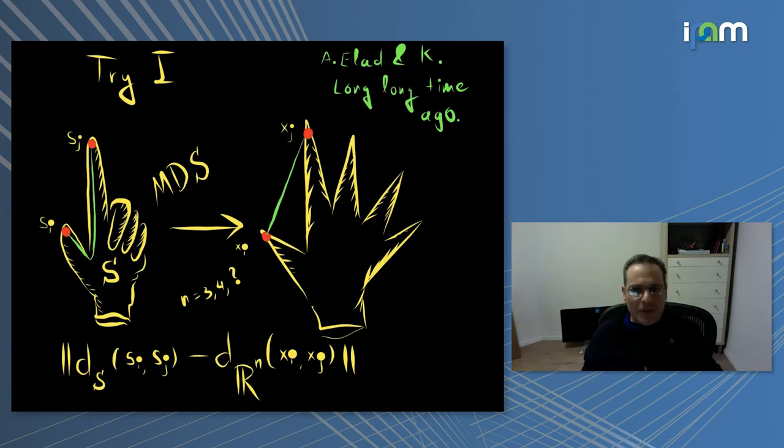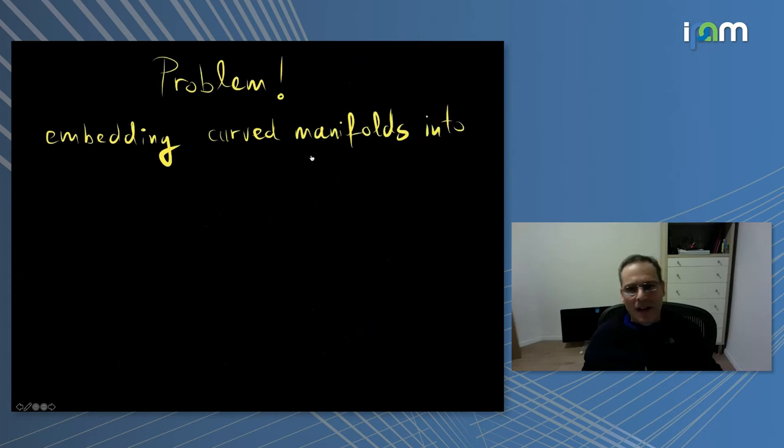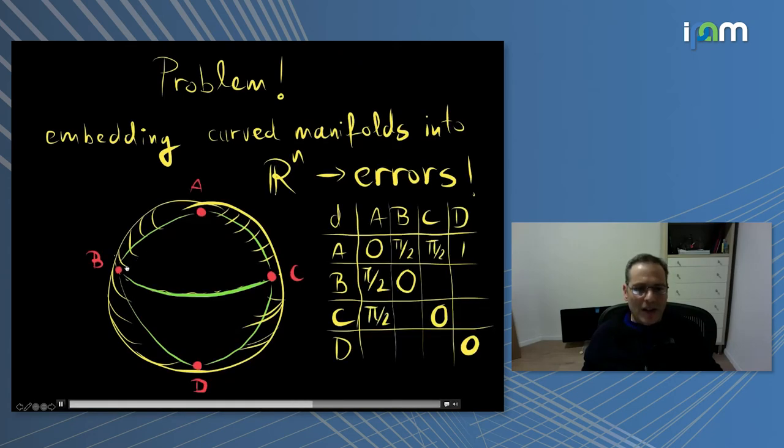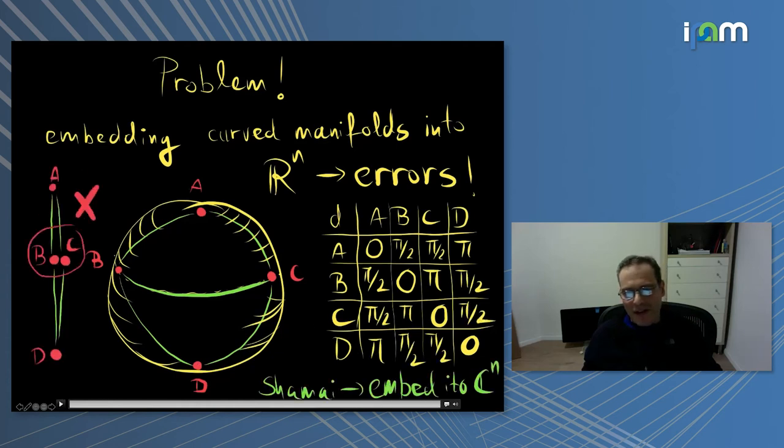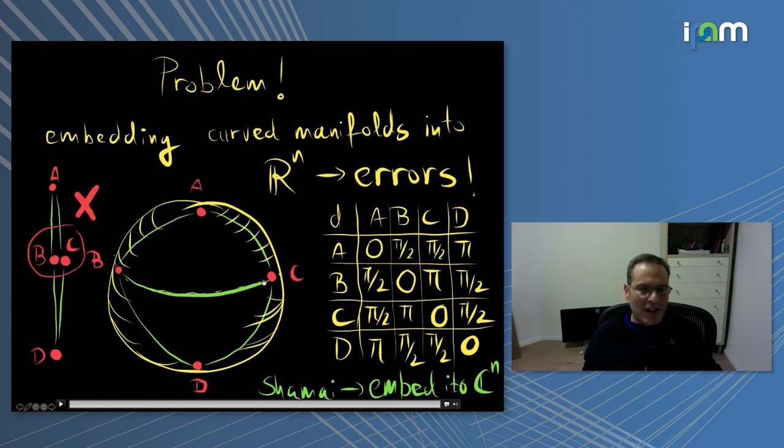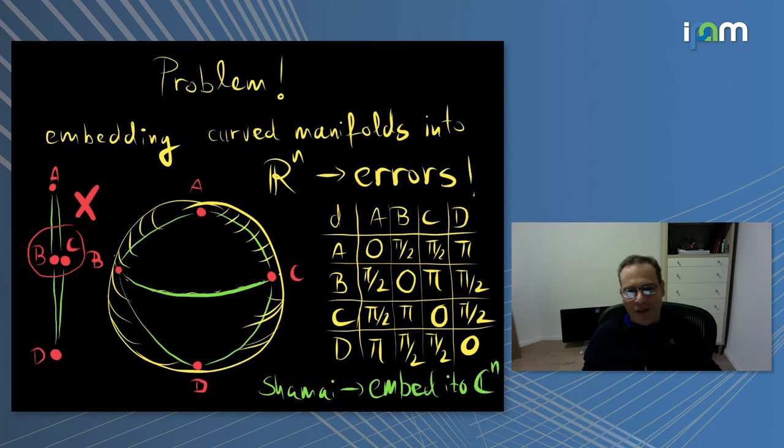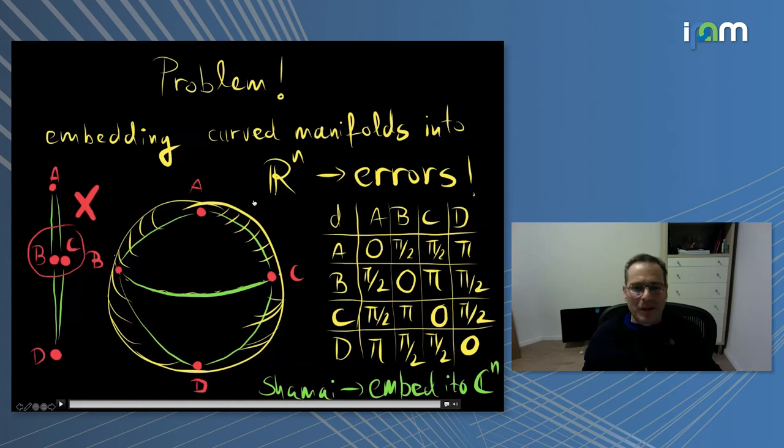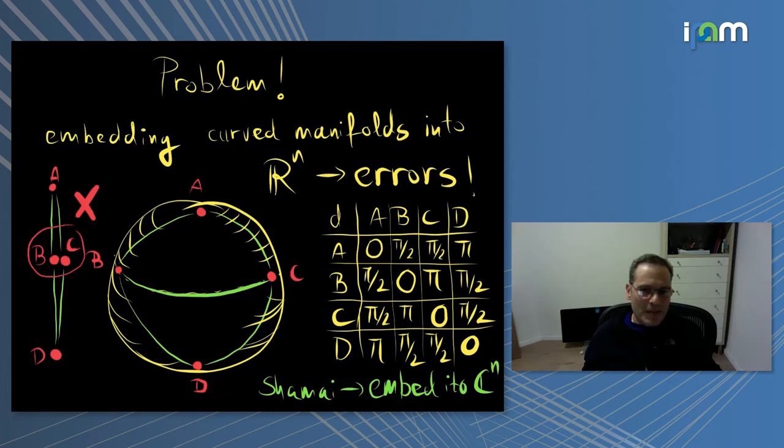This was done with MDS. The problem is that when you take a curved manifold and flatten it into a flat domain, you inevitably introduce errors that are unbounded. For example, if you take this sphere and these four points between which the distances are, if you think of the radius as being one, the distance between a and a would be zero, but between a and b would be pi over two. When you try to embed them into any finite-dimensional Euclidean space, b and c should be along the same straight line, meaning they should be at the same position. But we know b and c are along the equator, and therefore should be far apart. So it's a problem embedding into Euclidean space.